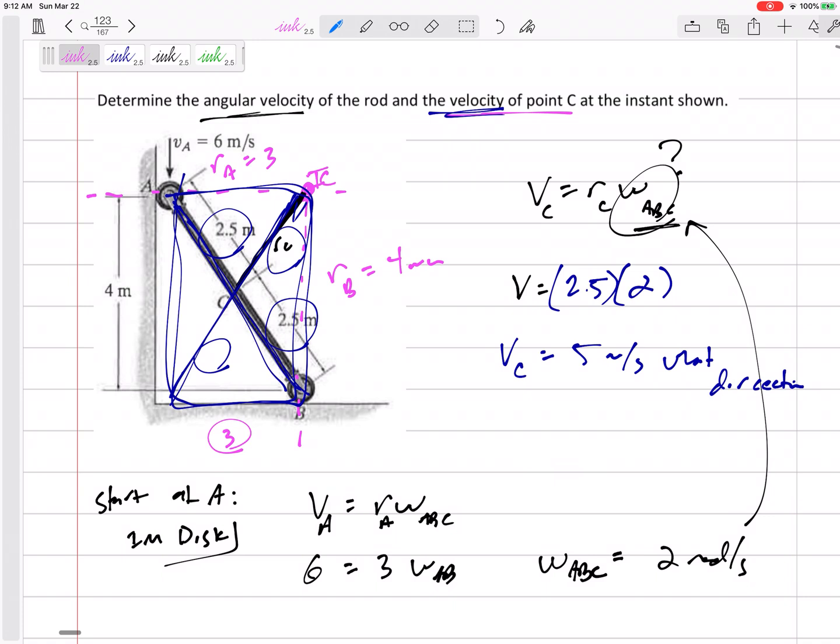Well, it would be perpendicular to this radial line. The velocity would be perpendicular to that radial line.